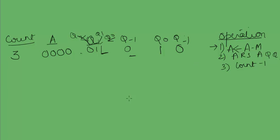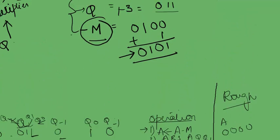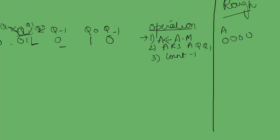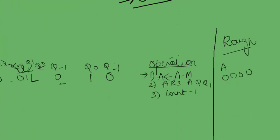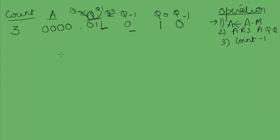Performing a ← a − m: a = 0,0,0,0 and −m = 0,1,0,1. Adding these gives a = 0,1,0,1. Next, perform arithmetic right shift on a, q, and q-minus-1. The MSB of a is 0, so we copy it: a becomes 0,0,1,0; q shifts to 1,0,1; and q-minus-1 becomes 1. Then decrement count: count = 2.